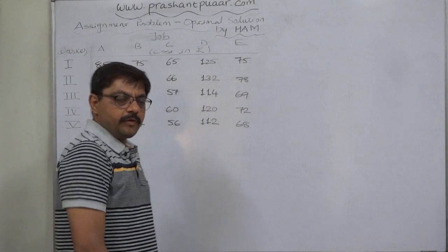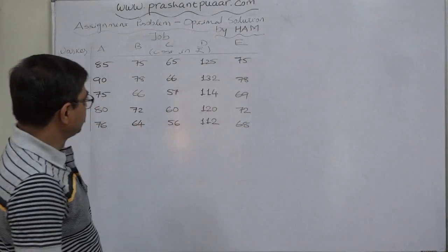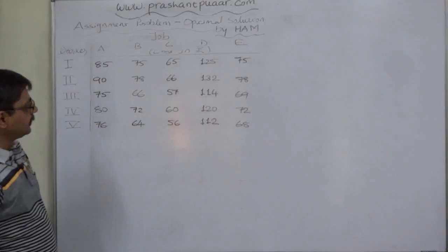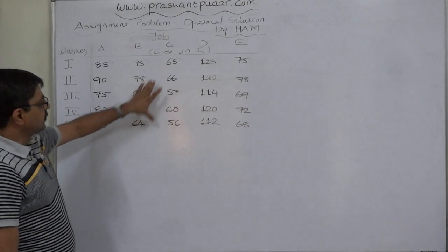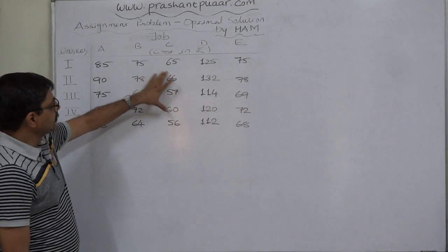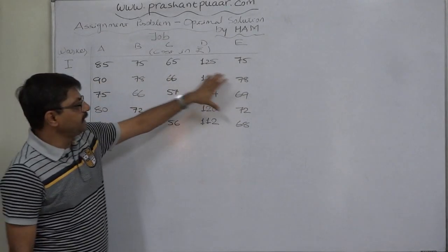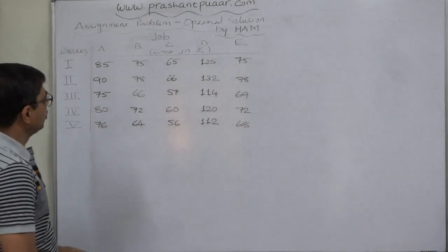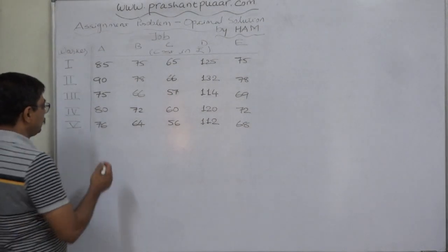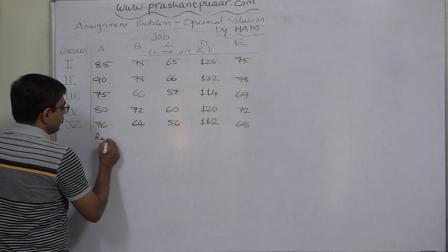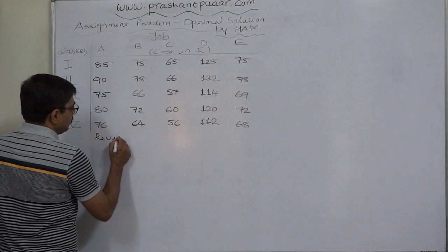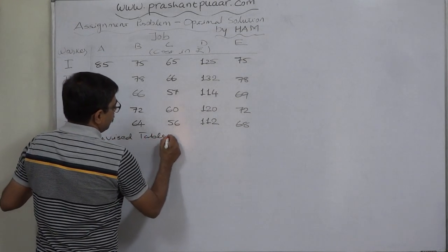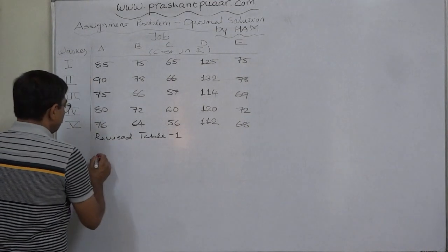As we know, the first step is to prepare a revised table by subtracting the lowest value of each row from all the values of that row. Let us prepare Revised Table 1, also known as the reduced table.